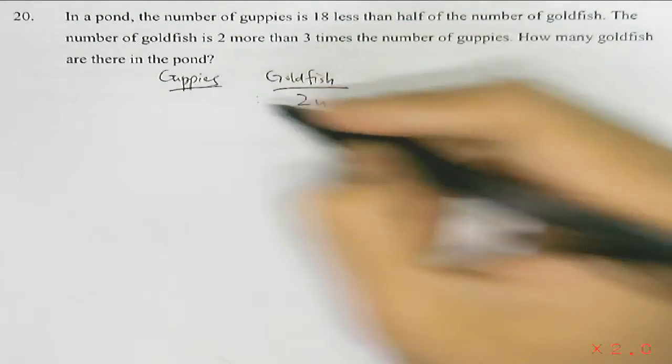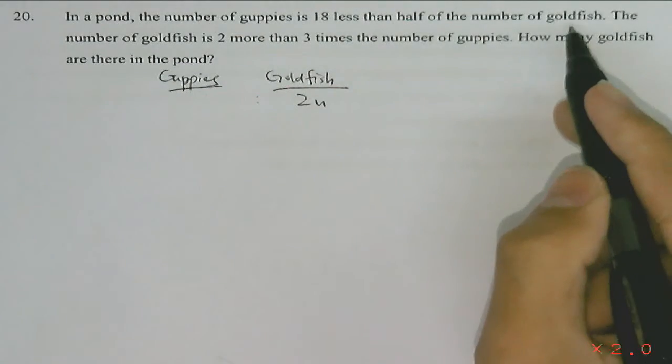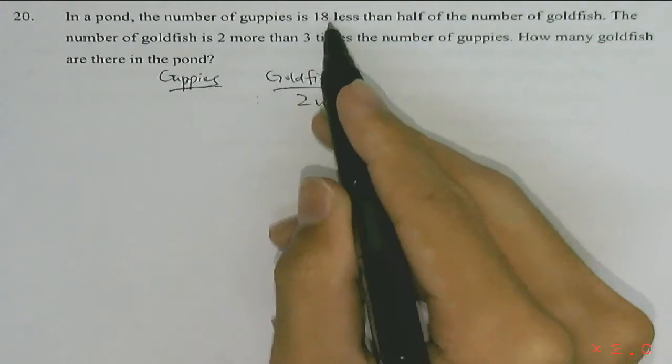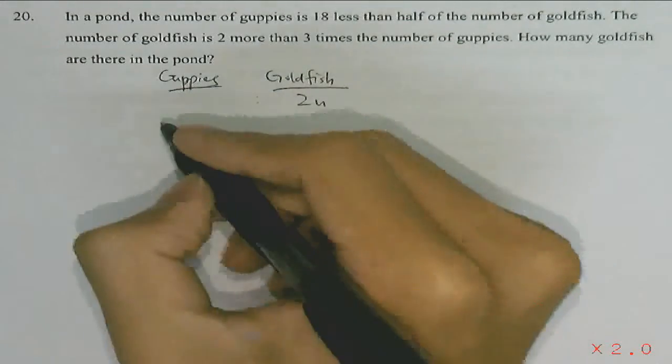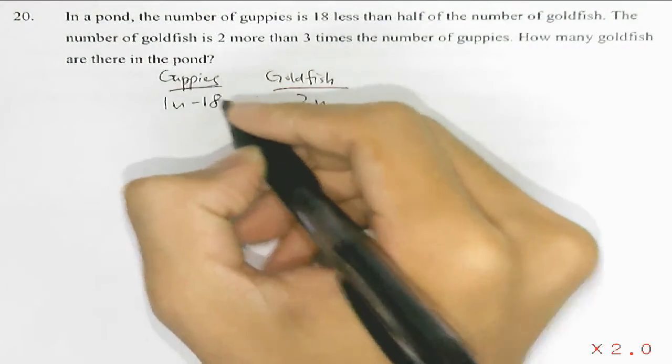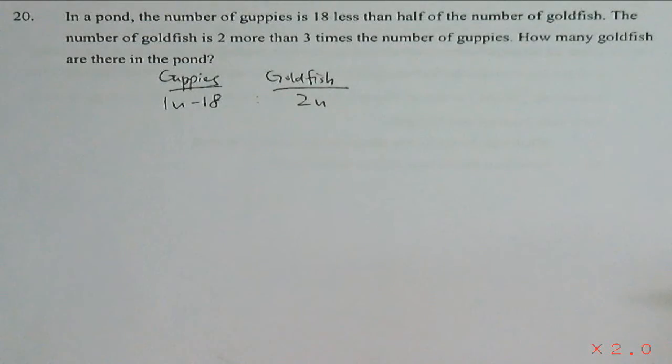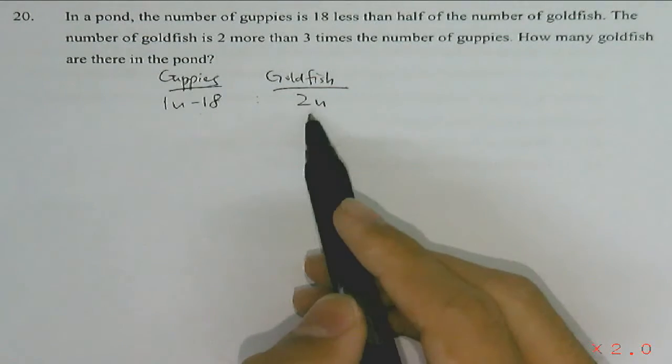So if goldfish have 2 units, half of the number of goldfish will be 1 unit, and we still need to have 18 less. So that will be 1 unit subtracting off 18. This will be the number of guppies and the number of goldfish.